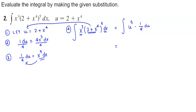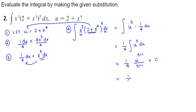We can factor out the constant 1/4, giving us 1/4 times the integral of u to the fifth du. Taking the antiderivative, we get 1/4 times u to the power of 5 plus 1 over 5 plus 1, which is u to the sixth over 6, and then we add the constant C.